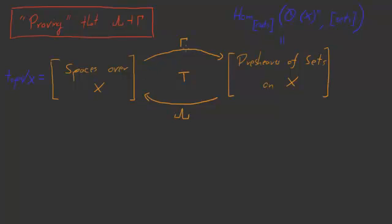In the last video, we defined these functors gamma and lambda. I've been claiming repeatedly that these guys form an adjoint pair, that lambda is left adjoint to gamma, and this is the video where I'm going to say something about that.